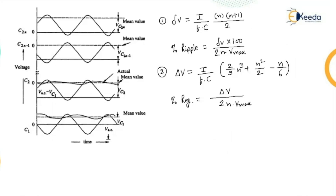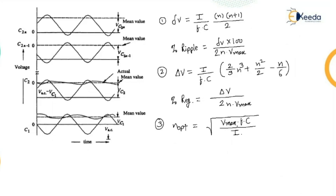The optimum number of stages can also be calculated. N(optimum) is equal to the square root of V(max) · f · C divided by current I. This gives the optimum number of stages for the maximum output voltage. That is all for this voltage multiplier circuit called the Cockcroft-Walton voltage multiplier circuit.